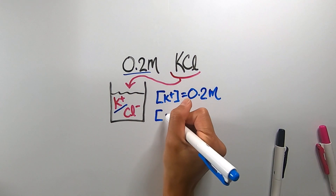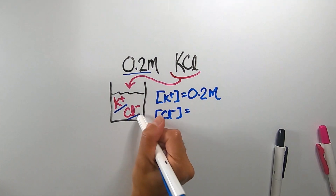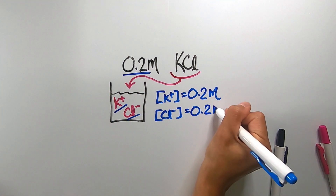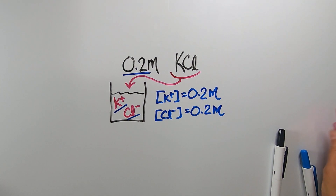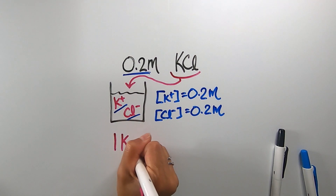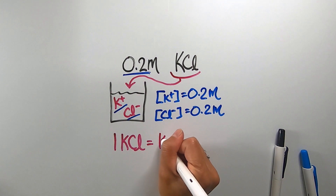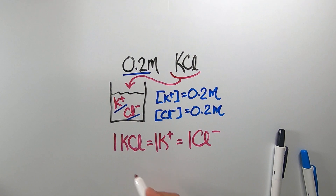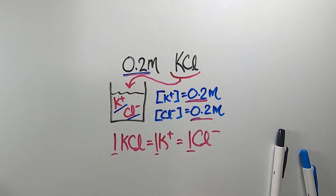If I were asked for the concentration of chloride ion in solution, I have one chloride ion times 0.2 molar, which is 0.2 molar chloride ion concentration in solution. For every one potassium chloride molecule that we dissolve in water, it will release one potassium ion and one chloride ion, which is a 1 to 1 to 1 ratio — a 1 to 1 to 1 molar concentration ratio.